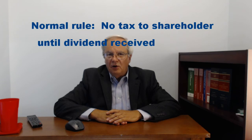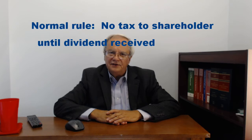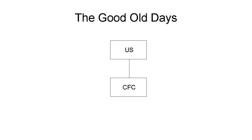Usually, shareholders of a corporation don't pay tax on their share of the corporation's earnings until the corporation pays a dividend. Back in the good old days, before Subpart F, a U.S. shareholder of a controlled foreign corporation, or CFC, could cause the CFC to loan its earnings back to the shareholder.